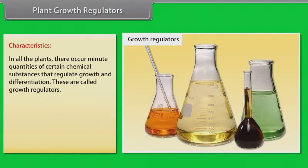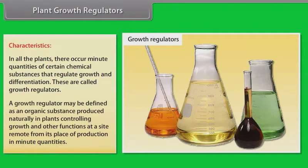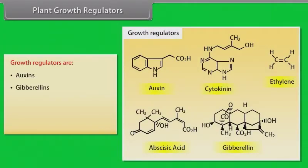Plant growth regulators - characteristics. In all the plants, there occurs minute quantities of certain chemical substances that regulate growth and differentiation. These are called growth regulators. A growth regulator may be defined as an organic substance produced naturally in plants controlling growth and other functions at a site remote from its place of production in minute quantities. These are auxins, gibberellins, cytokinins, ethylene and abscisic acid.